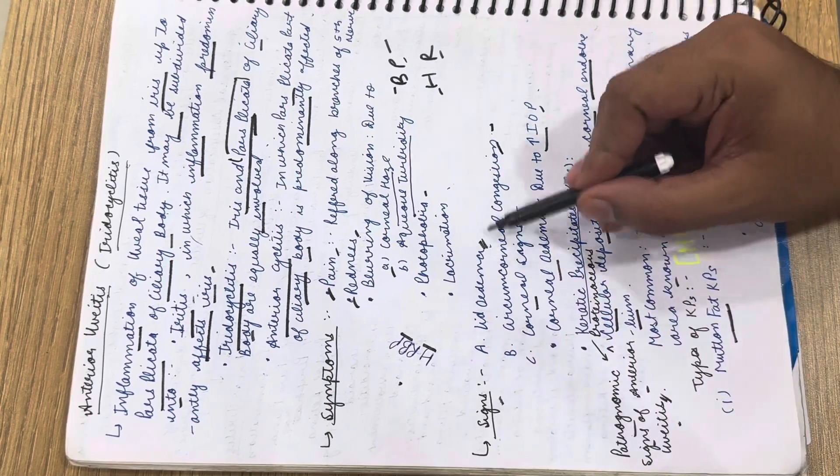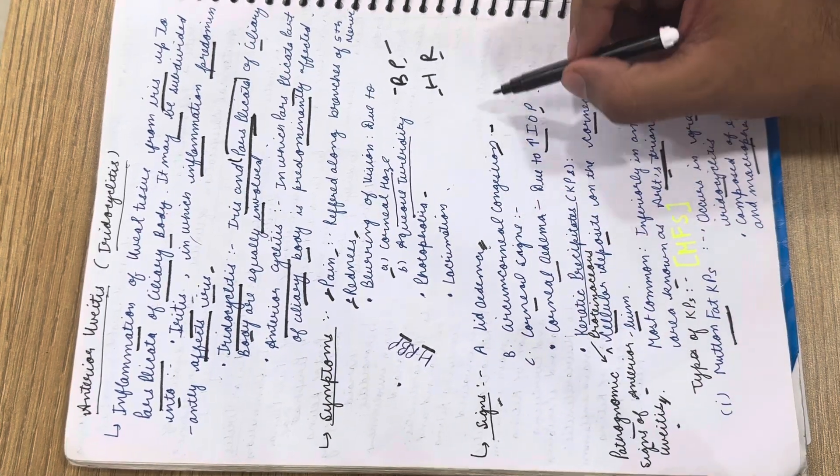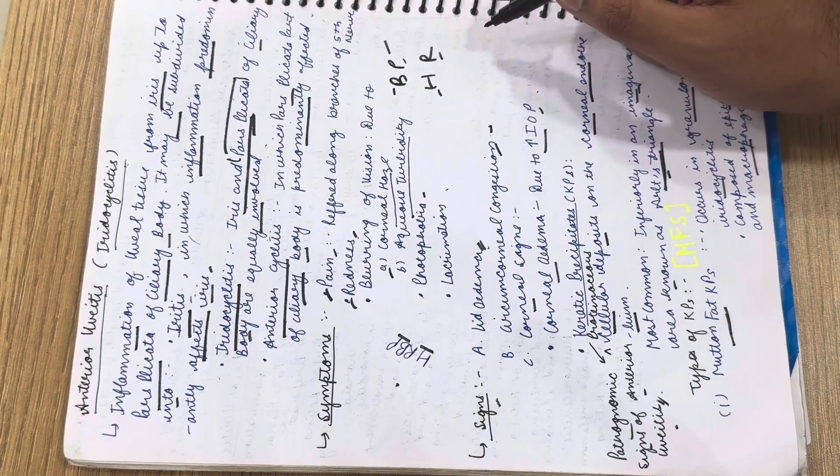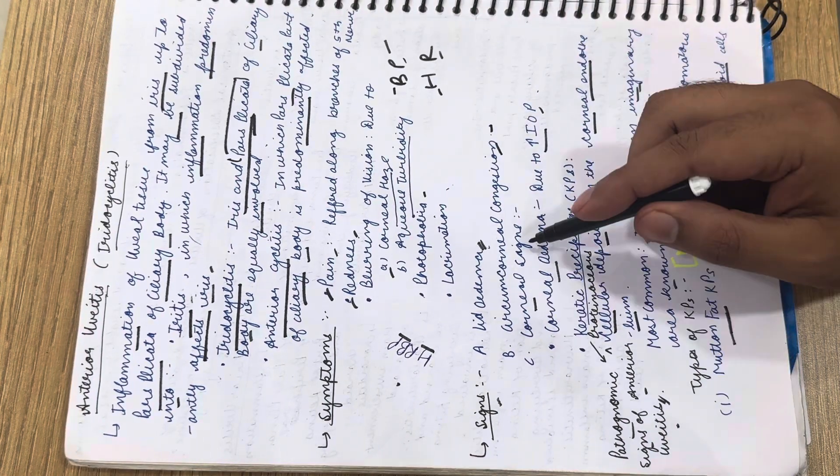The signs include lid edema, circumcorneal congestion which accounts for redness in the eye, and corneal signs. Corneal edema occurs due to increase in IOP.